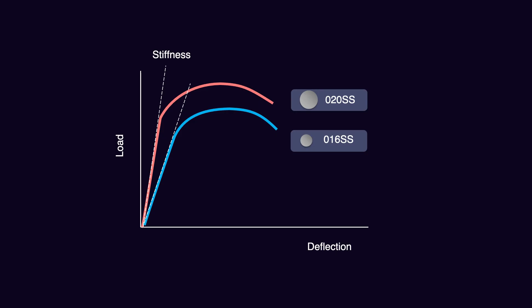One thinner, one thicker. When we draw a load deflection graph, we get two graphs. The thicker wire demonstrates a slightly different graph than the thinner wire. It is more upright because in response to the same load, the amount of deflection in the thicker wire is less.